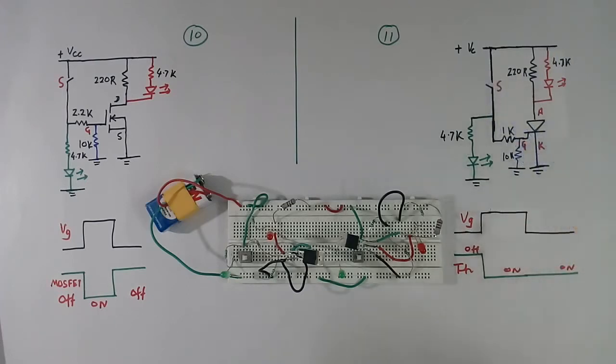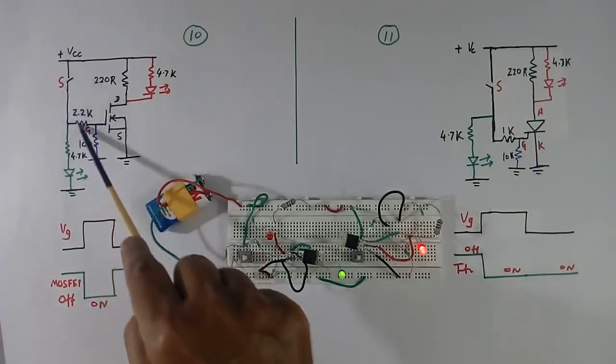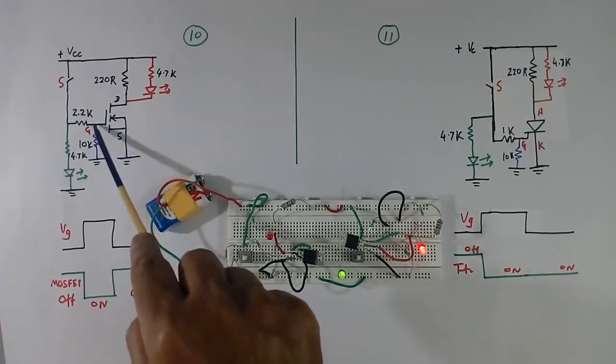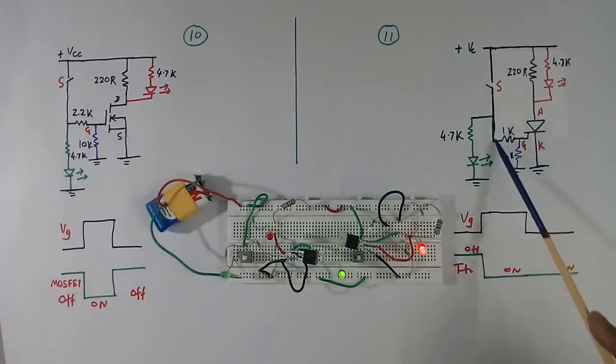Now I will close the switch. So this green LED is glowing, means gate pulse is going. Now gate current is flowing like this. Here there was no gate current, only voltage will come here. With voltage itself it will come ON. Here voltage will come here and current also will flow like this. And load current is flowing. This transistor is ON and this LED also is glowing.